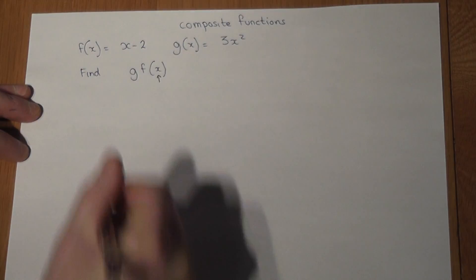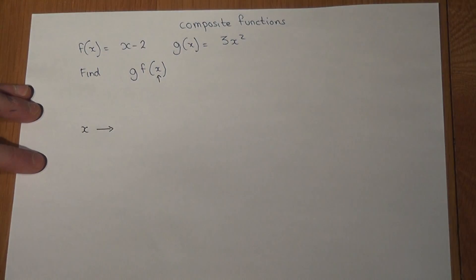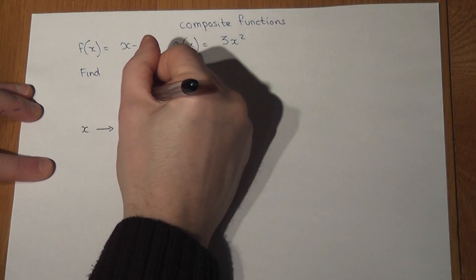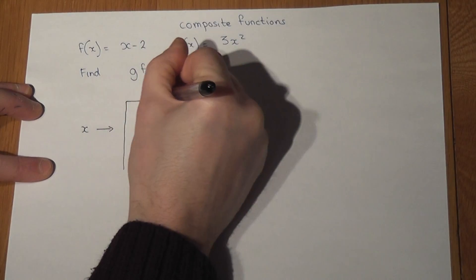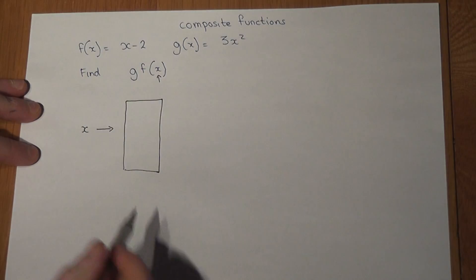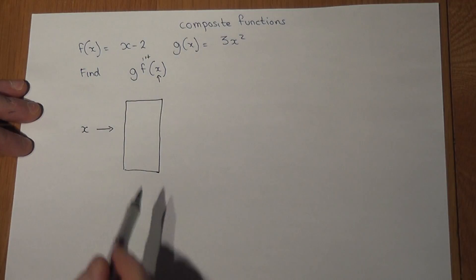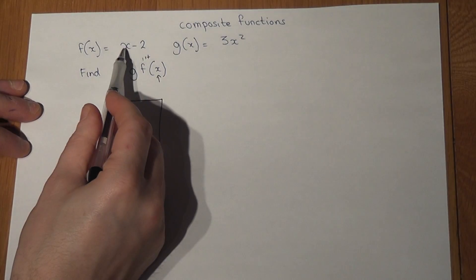x is our initial input, and first of all it's going through the function f. We read left to right, so f comes first of all. The function f says whatever the input is, we